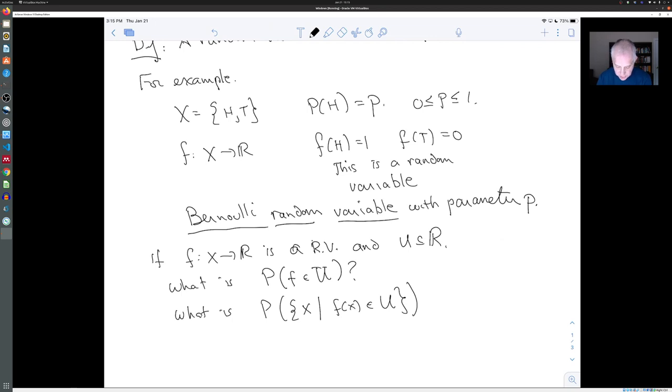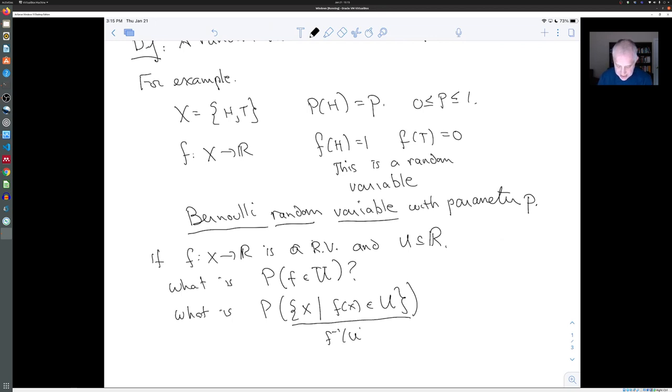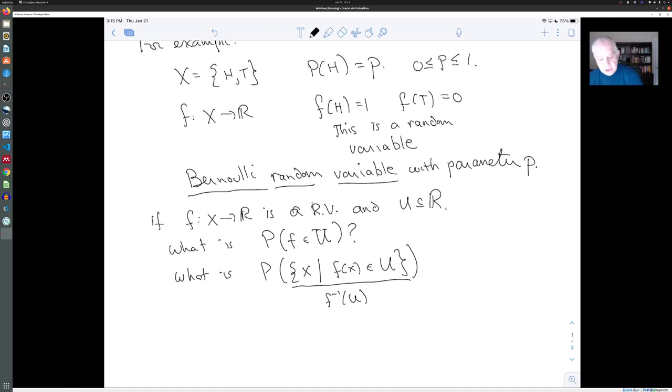This is called f inverse of U. It's the set of points in X, so that f of them land in U. There's not an inverse function here. This is just notation. And this is, by definition, the probability that f is in U.